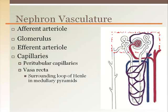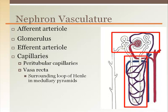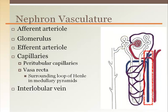The efferent arteriole leads to the peritubular capillaries which surround both the proximal and distal convoluted tubules located in the renal cortex. The capillaries surrounding the loop of Henle in the medulla are the vasa recta. Blood from these capillary beds enters the interlobular vein to be eventually returned to the general circulation.